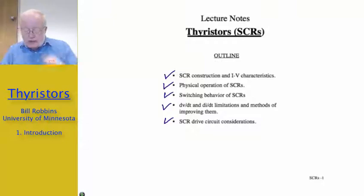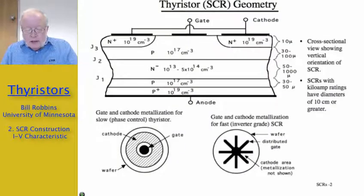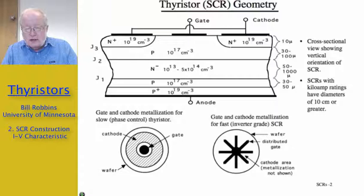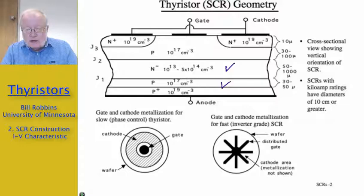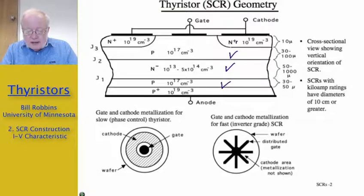Going to the first topic on the next slide, this shows a vertical cross-section of a typical so-called phase-controlled thyristor, which is intended for 60 Hz applications. The unique part about it is it's a four-layer structure. There is a P-type layer close to the anode, followed by an N-minus layer, which is lightly doped and functions as a drift region, a moderately doped P-region, and then finally the heavily doped N-plus region where the cathode is connected.